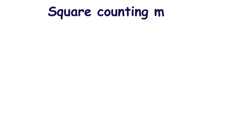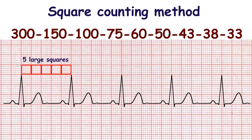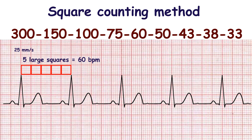The square counting method is very easy and it doesn't need any difficult calculation. When ECG is recorded with a speed of 25 millimeters per second, you should use the sequence 300, 150, 100, 75, 60, 50, 43, 38, and 33. Counting off every large square is performed from one QRS complex to the following one.